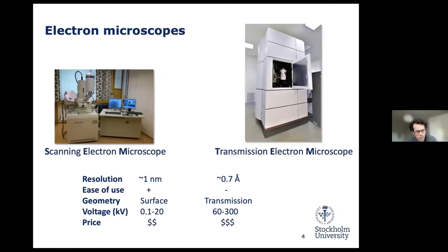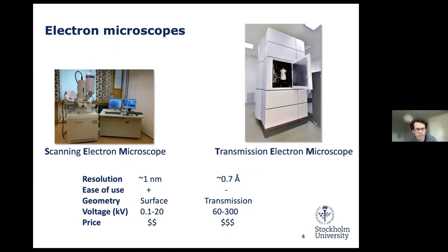First, a few words about electron microscopy. There are different types of electron microscopes available. You might have come across the scanning electron microscope or possibly the transmission electron microscope — these are two of the most commonly used electron microscopes. The scanning electron microscope, as you see on the left side here, is a microscope that is mainly used for surface studies. We can get nice images of the surfaces and surface structures of our materials. Using this equipment we can achieve a resolution around one nanometer in our images. The SEM takes some training to use, but compared to the TEM it's rather easy.